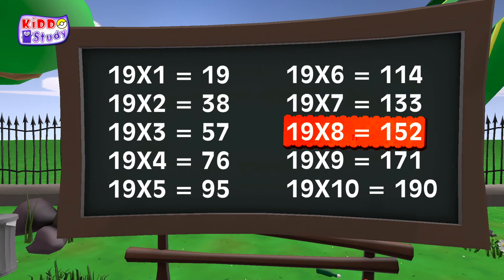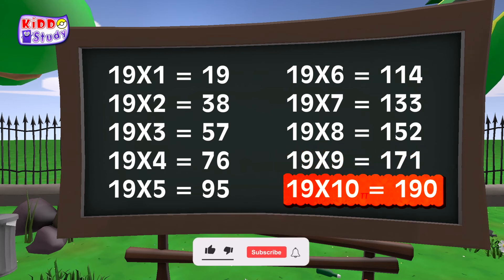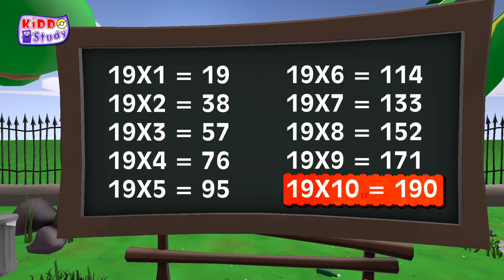19×5 are 95. 19×6 are 114. 19×7 are 133. 19×8 are 152. 19×9 are 171. 19×10 are 190.